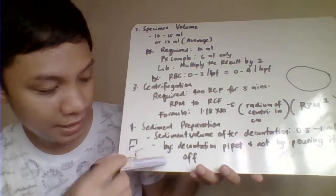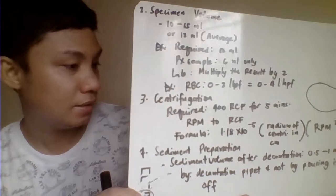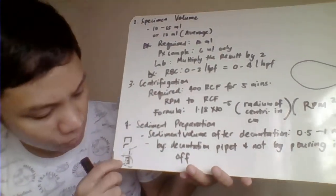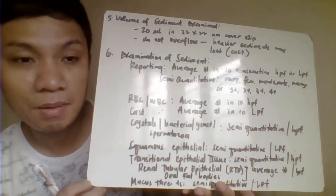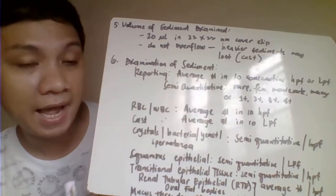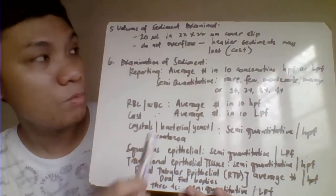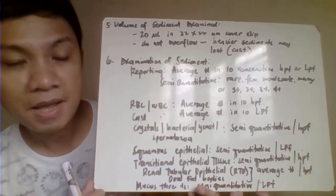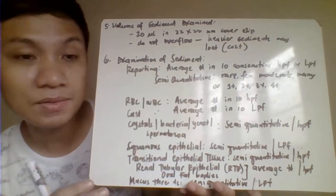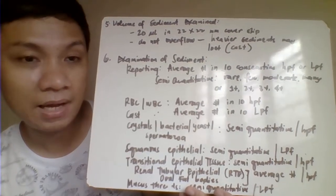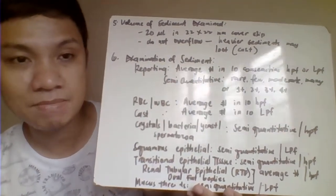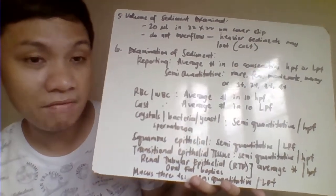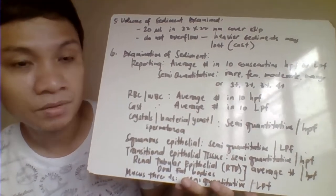After decantation, resuspend the sediment at the bottom by flicking the tube to loosen the packed material. Then prepare your smear: place approximately 20 microliters of sediment after decantation onto a slide with a 22 by 22 millimeter coverslip. Make sure the urine sediment does not overflow outside the coverslip, because the larger sediments like casts tend to migrate outside the coverslip and you will not be able to identify them during microscopic identification.